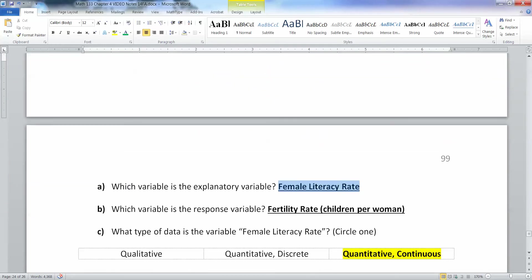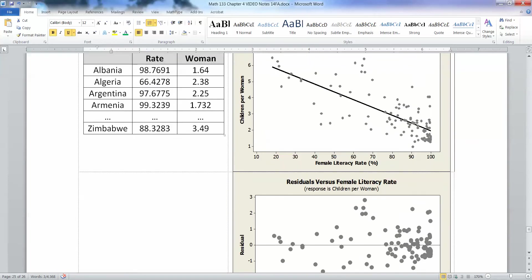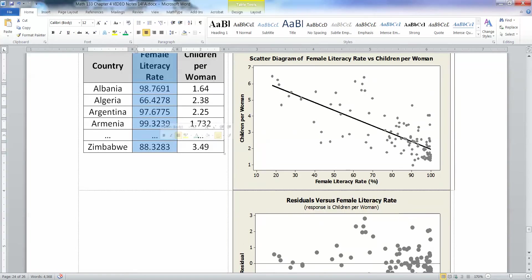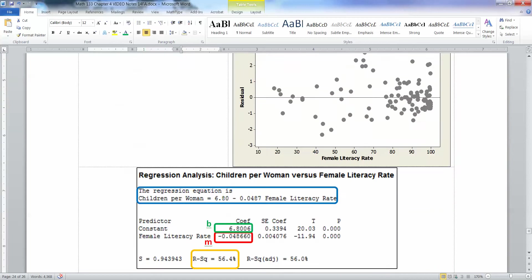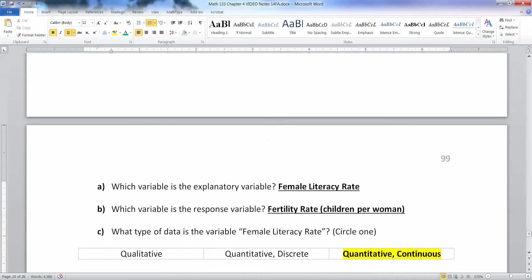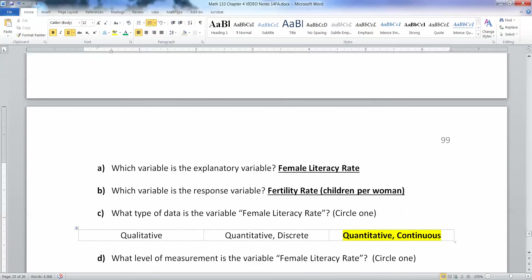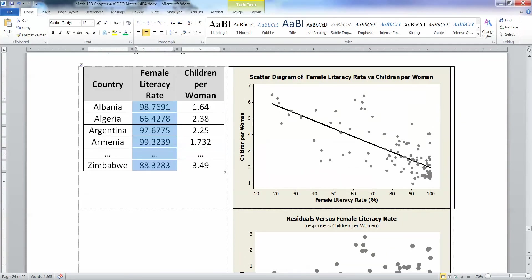Alright, so let's look here. We have female literacy rate is our explanatory variable. The explanatory variable is your x, your input, your independent variable. So in our case, that's the female literacy rate. And the fertility rate, which is children per woman, that's your response variable. Now what type of variable is the female literacy rate? Well, that is quantitative continuous. If you look back at the numbers that we're using here, there's a lot of decimal places going on here. For our purposes, this is continuous. It's an averaged rate for the whole country. So that's what makes it have so many decimals.